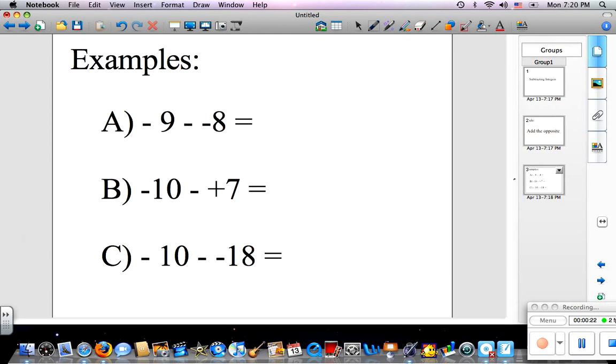Here are some examples. If I have negative 9 minus negative 8, I simply add the opposite. So, I change this subtraction into addition, and then I take the opposite sign of negative and make it into a positive. So, what this is is negative 9 plus positive 8, and that equals negative 1.